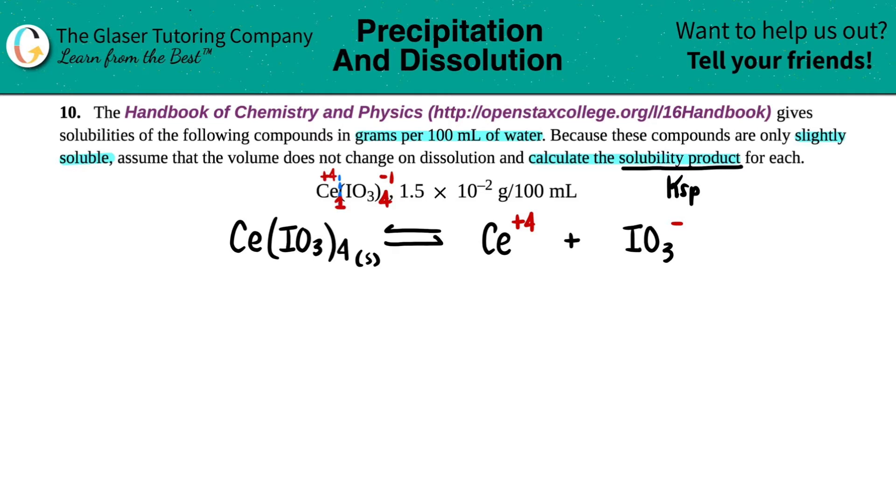Now we just have to make sure that it's balanced. There's one Ce, one Ce, but there's four iodates. So I have to put a four in front of the IO3. These are charges, so they're going to be aqueous. And now we have a balanced equation.